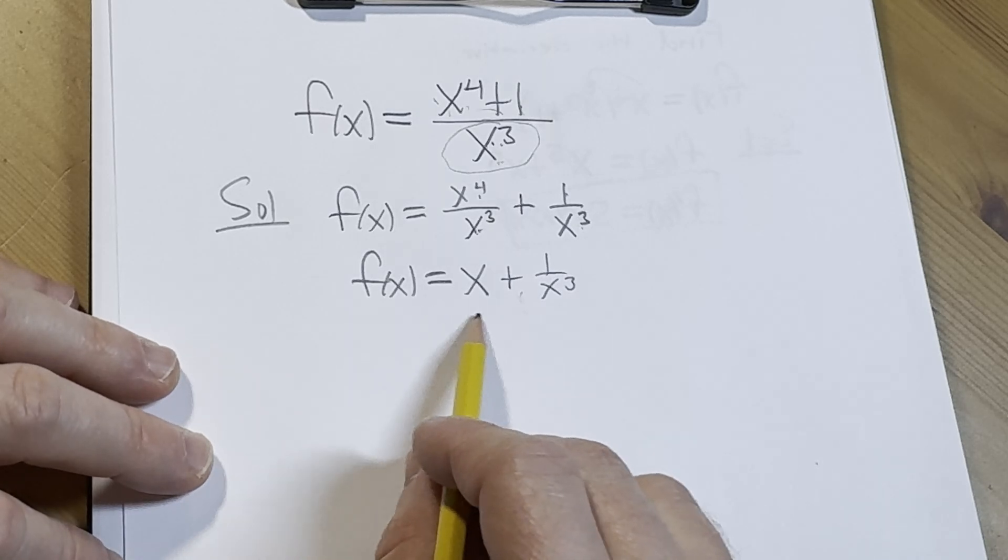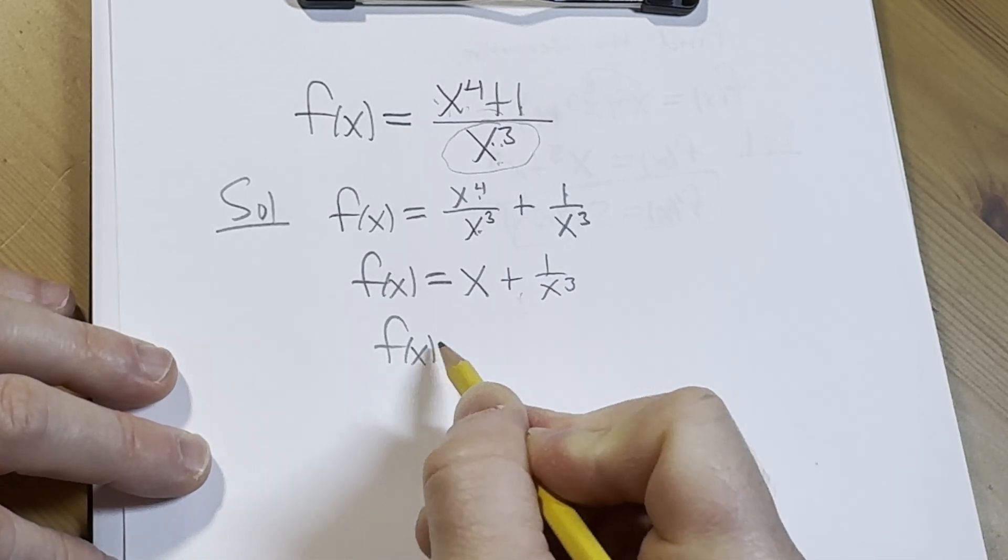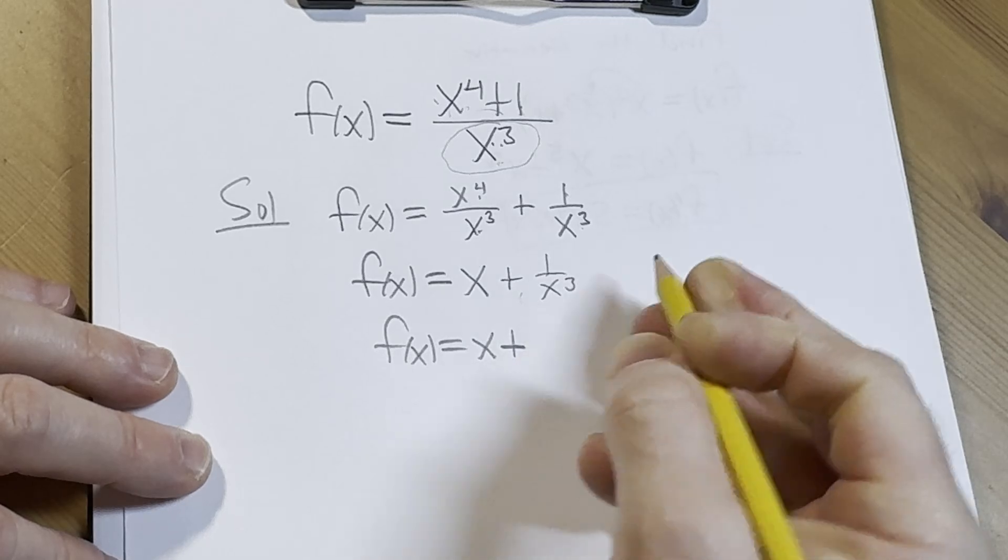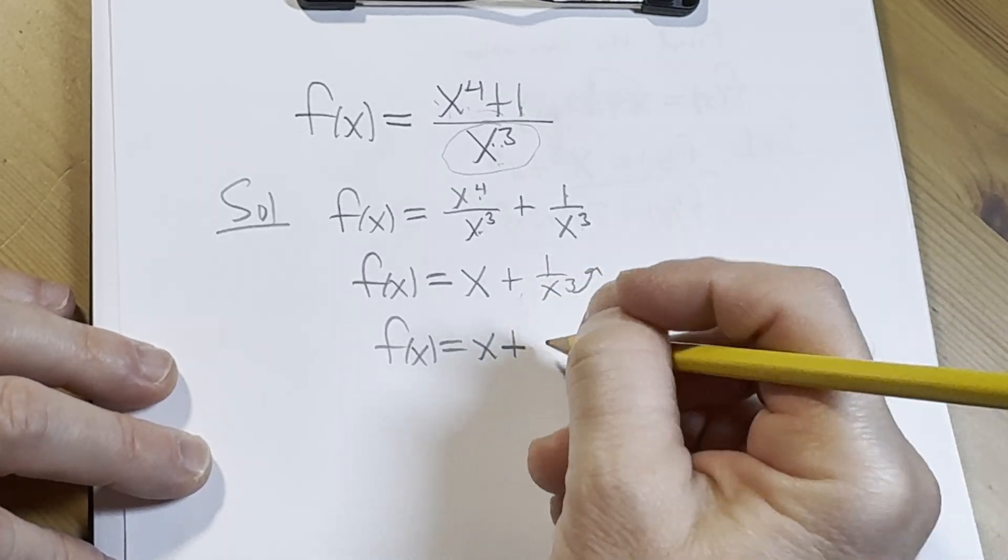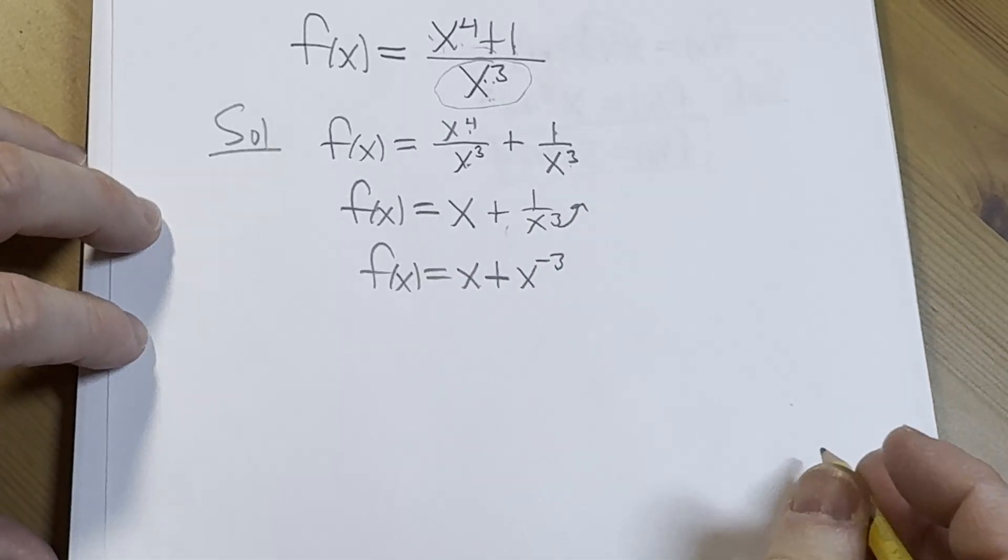So let's go ahead and do that. We have f(x) equals x plus, then you can take this and bring it upstairs, we get x to the negative 3. And now we're in a good place.